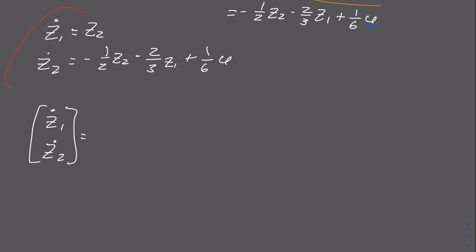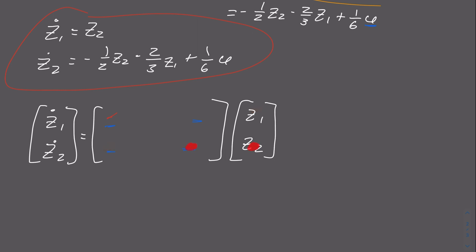Now we take these two equations and put them into matrix form. Since we have ż1 and ż2 on the left, we write a matrix on the right containing z1 and z2 (without dots). This gives us a 2×2 coefficient matrix. Recalling from linear algebra, matrix multiplication means the top row coefficients multiply the z column entries, and likewise for the bottom row.